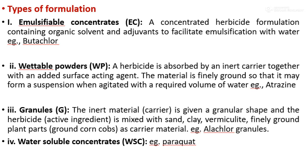Types of formulation. First is emulsifiable concentrate (EC): a concentrated herbicide formulation containing organic solvent and adjuvants to facilitate emulsification with water. Example: butachlor. Adjuvants improve the effect of the herbicide. Second is wettable powder (WP): a herbicide absorbed by an inert carrier together with an added surface-acting agent, finely ground so that it may form a suspension when agitated with the required volume of water. Example: atrazine.